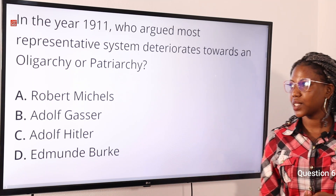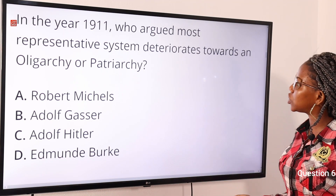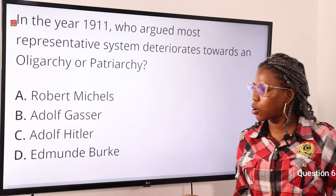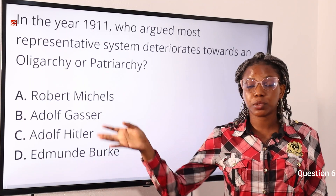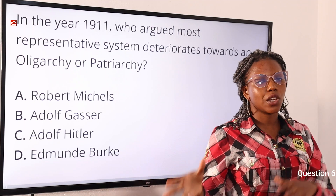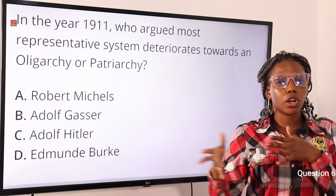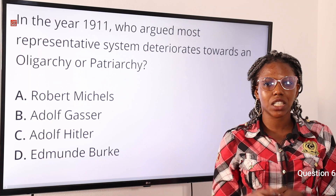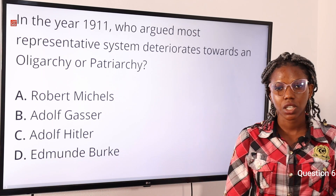Question six: in the year 1911, who argued that most representative systems deteriorate towards an oligarchy or patriarchy? Option A: Robert Michels, option B: Adolf Gasa, option C: Adolf Hitler, option D: Edmund Burke. The answer is option A, Robert Michels.